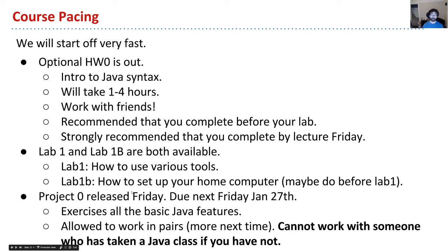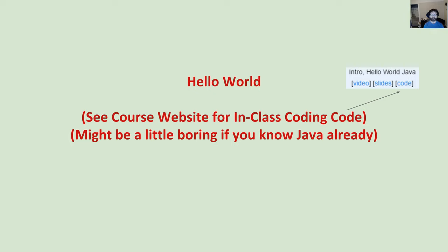Project Zero will be released Friday and is due a week later. You get seven days to build a gravity simulator where you can watch planets orbiting in space, using basic features of Java. You're allowed to work in pairs — the key rule is you cannot work with someone who's taken a Java class if you haven't. We'll send out a form to set up partnerships. In the next video, recorded about six months ago, we'll do our first programming assignment — younger me will tell you about your first Java program.